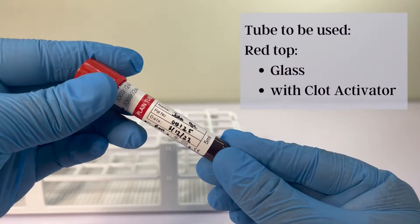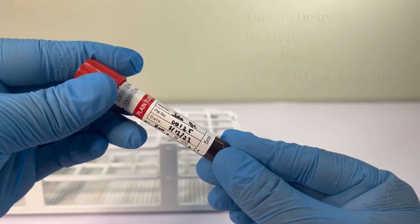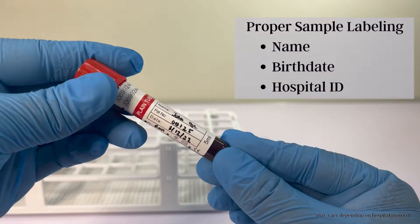First, obtain your blood sample in a glass test tube or a test tube with clot activators. Make sure that your patient sample is labeled according to hospital protocol. This may include the patient's name, hospital identification number, and date of birth.